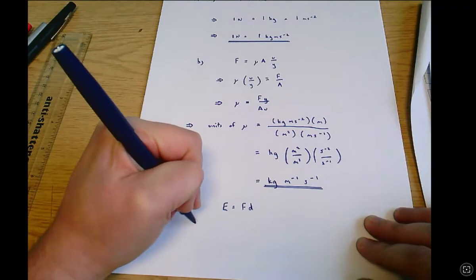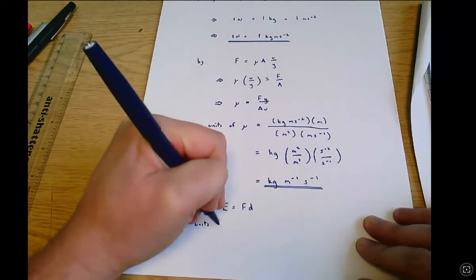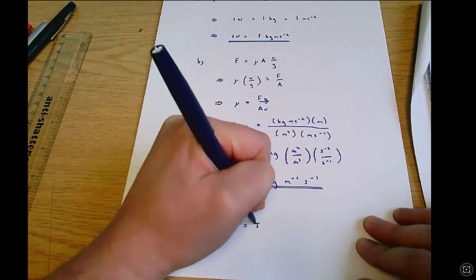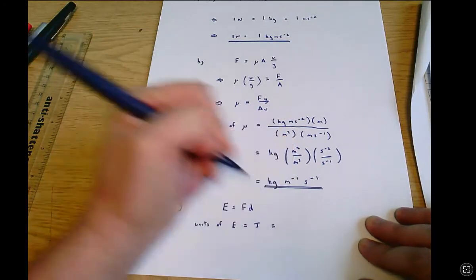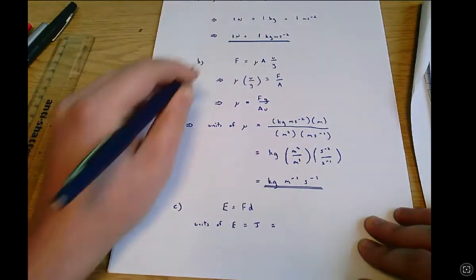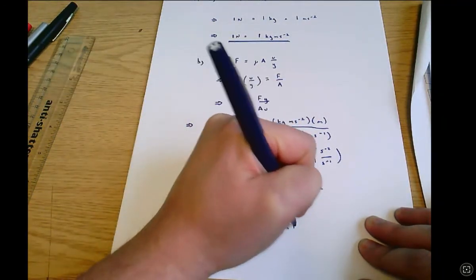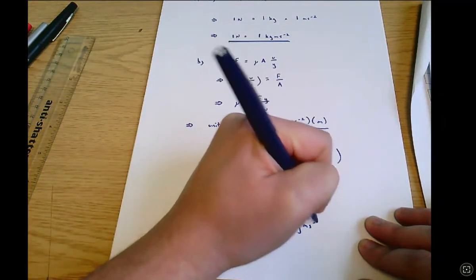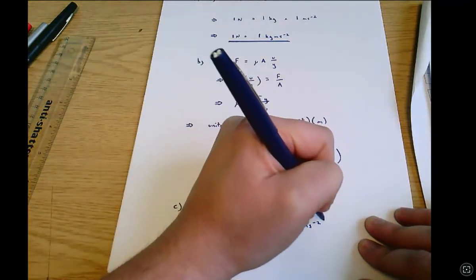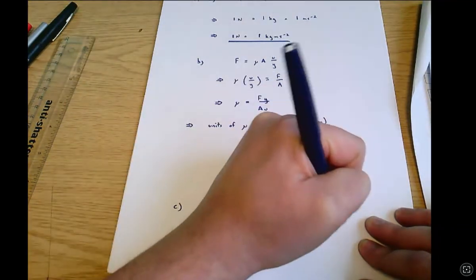And so the units of energy which are joules they must equal the units of force which we already know are kilograms meters per second per second, sorry kilogram meters seconds to the minus two, multiplied by the units of distance which are meters.